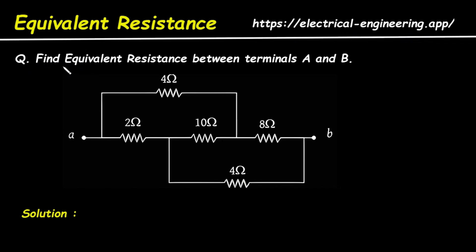Question: Find equivalent resistance between terminals A and B. For this circuit, we have to determine its equivalent resistance between terminal A and B. Solution.